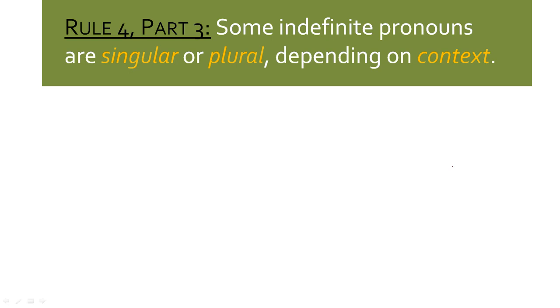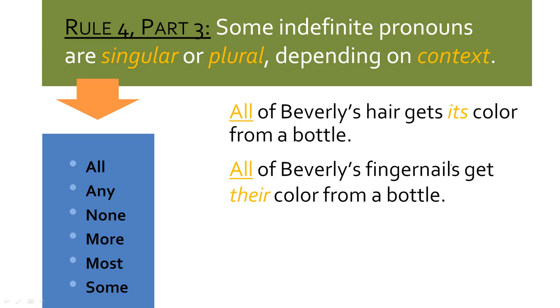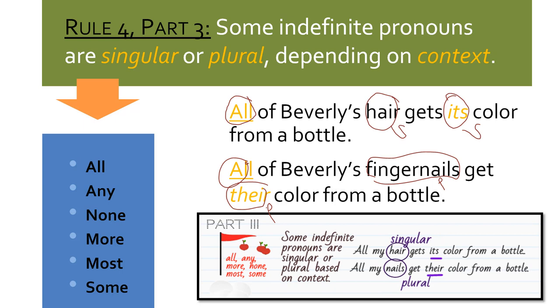Rule four, part three: some indefinite pronouns are singular or plural depending on context — all, any, none, more, most, some. When these appear, look at the rest of the sentence. 'All of Beverly's hair' — hair is singular, so use a singular pronoun. 'All of Beverly's fingernails' — fingernails are plural, so 'their plural color from the bottle.' Some indefinite pronouns are singular or plural based on context, and we look later in the sentence to find out.